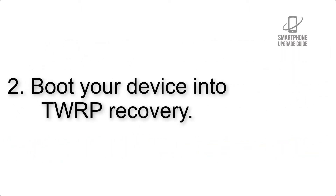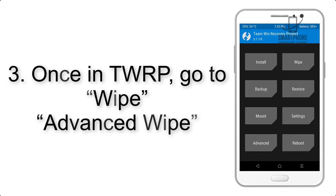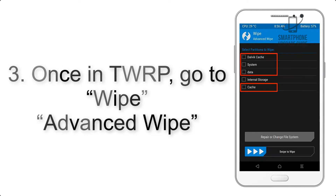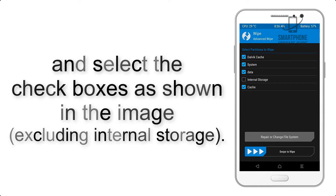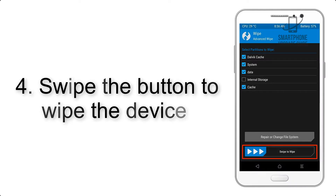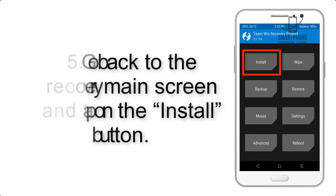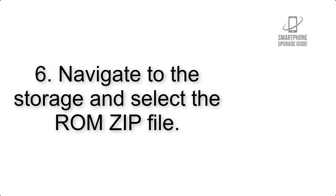Step 2: Boot your device into TWRP recovery. Once in TWRP, click on Wipe, then Advanced Wipe, and select the checkboxes as shown in the image, excluding internal storage. Step 4: Swipe the button to wipe the device.